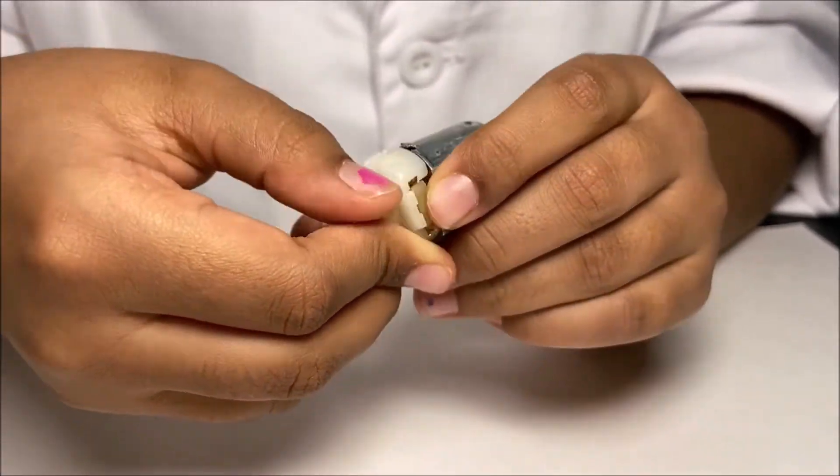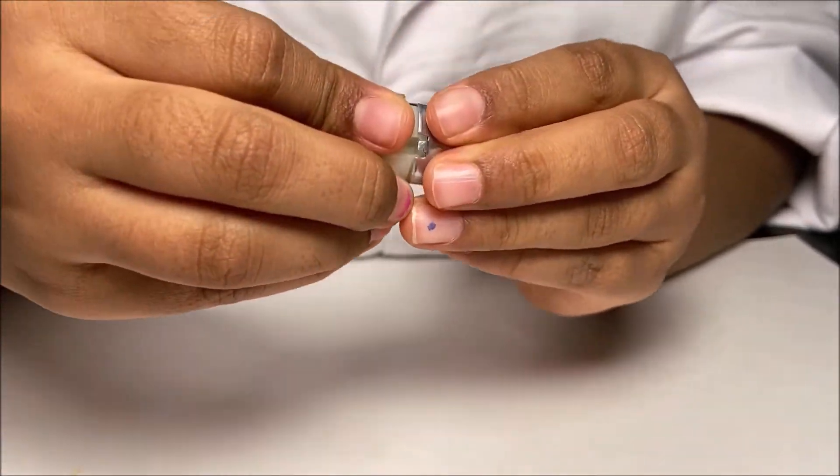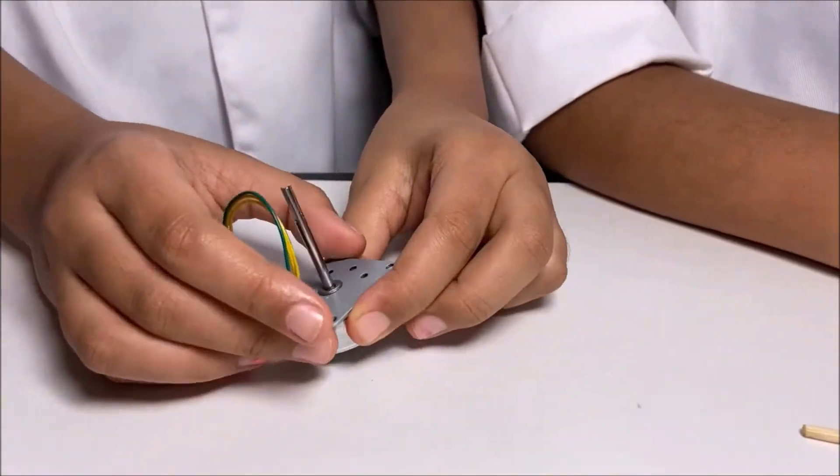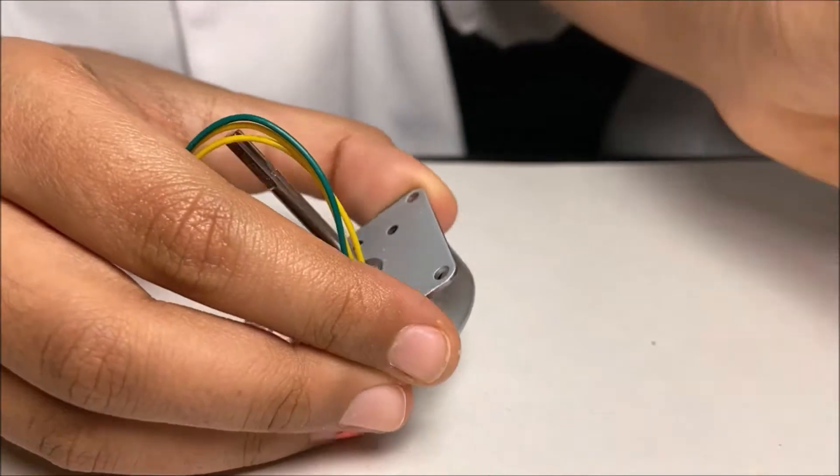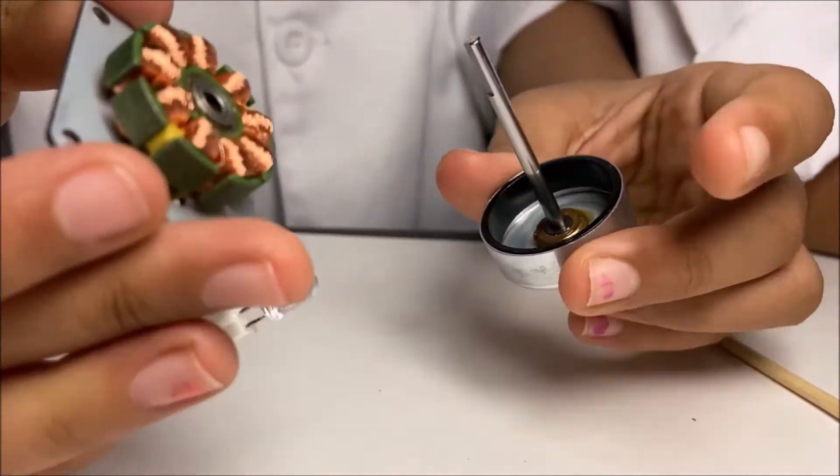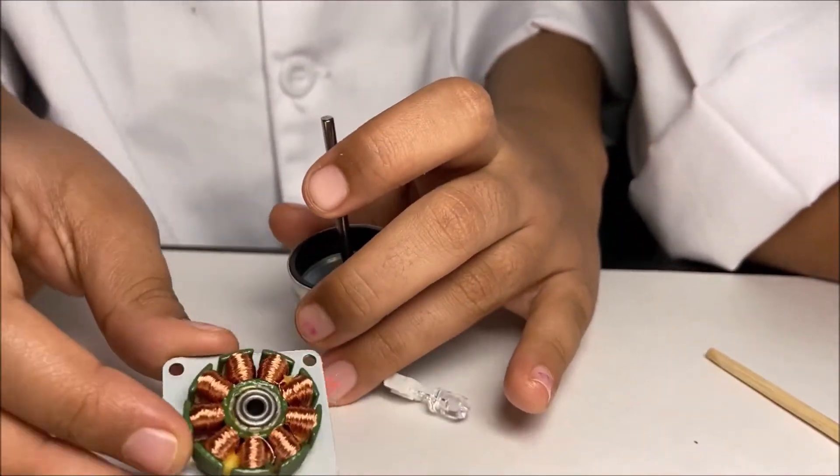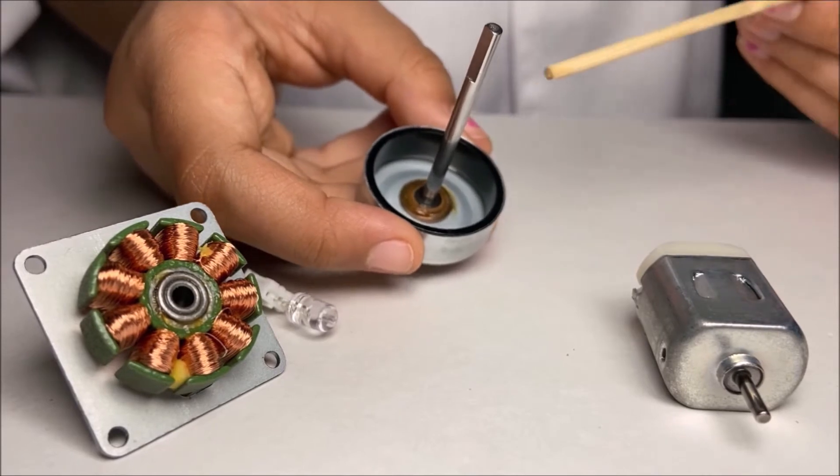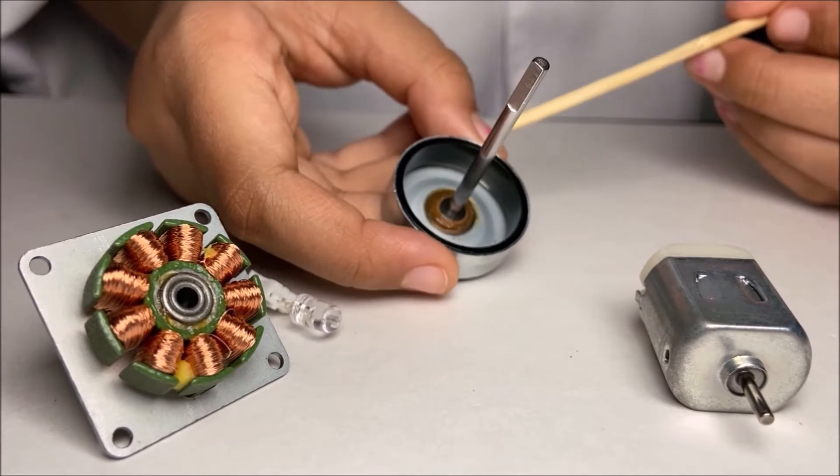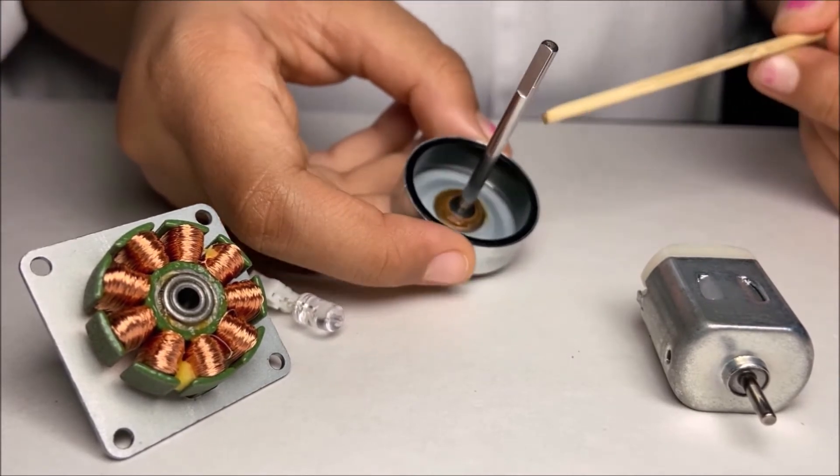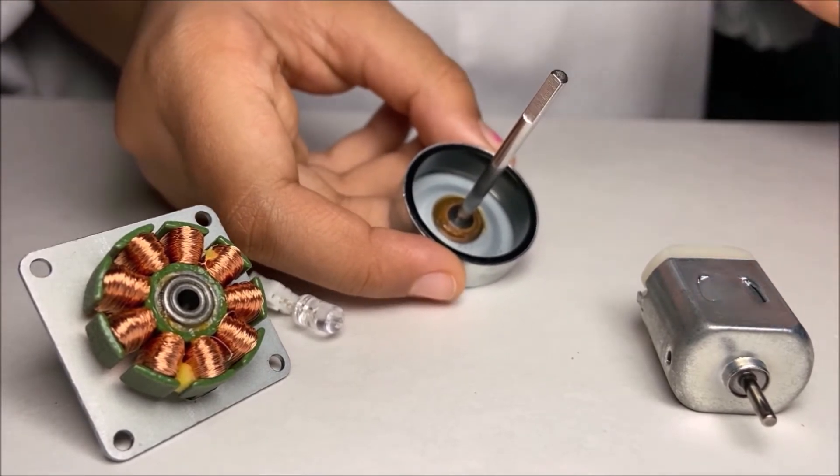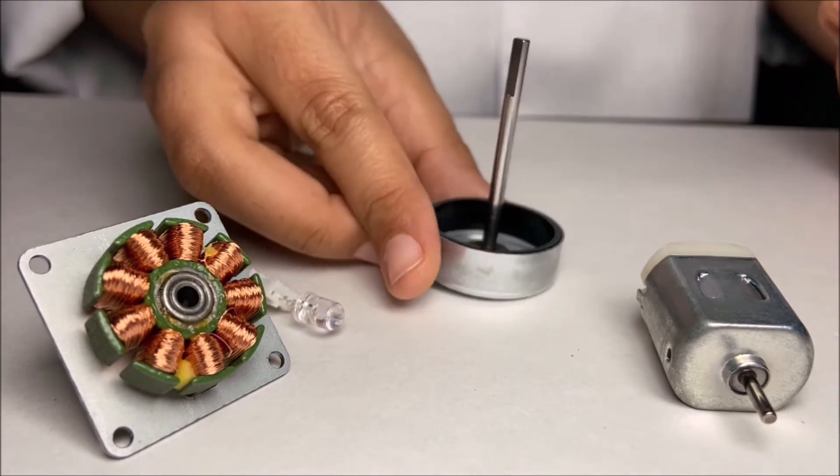Now we're going to learn about the generator. Here I have a generator and we're going to open it. Over here we have a circular object and this circular object is a permanent magnet. This permanent magnet has a north and south pole and it has its own magnetic field.